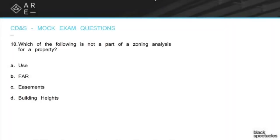Okay, number 10. Which of the following is not part of a zoning analysis for a property? The use, FAR, easements, building heights.